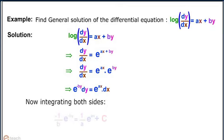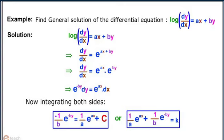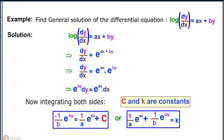Now, integrating both sides: −(1/b) e^(−by) = (1/a) e^(ax) + c, or (1/a) e^(ax) + (1/b) e^(−by) = k, where c and k are constants.